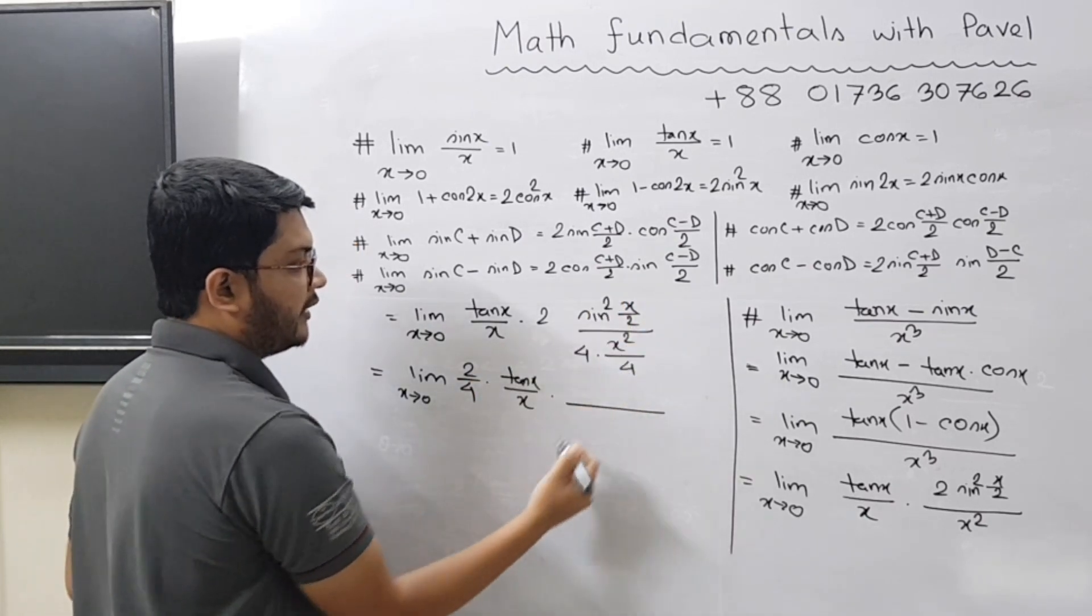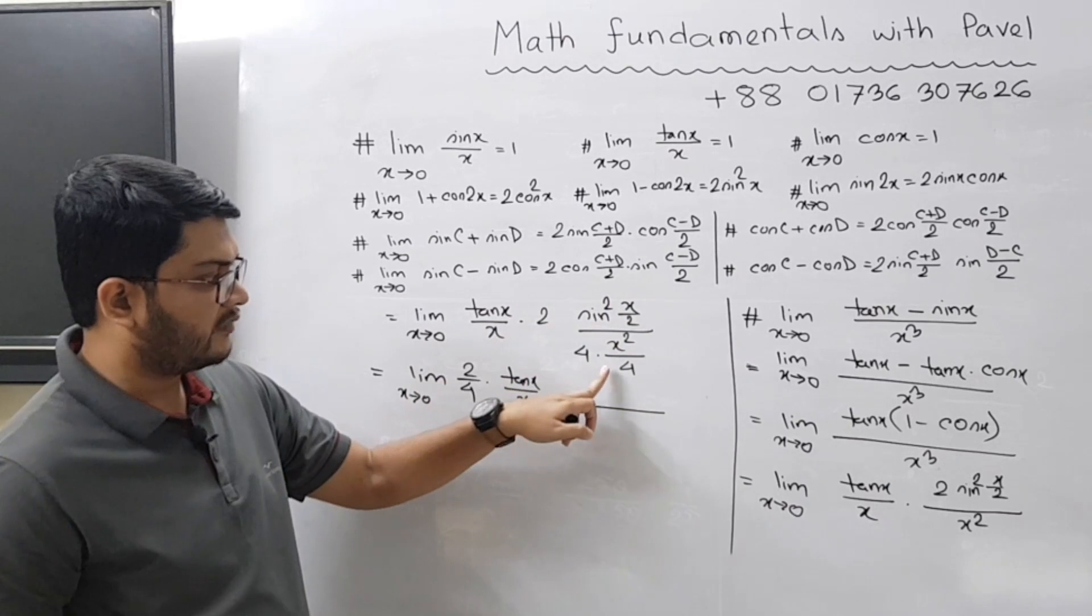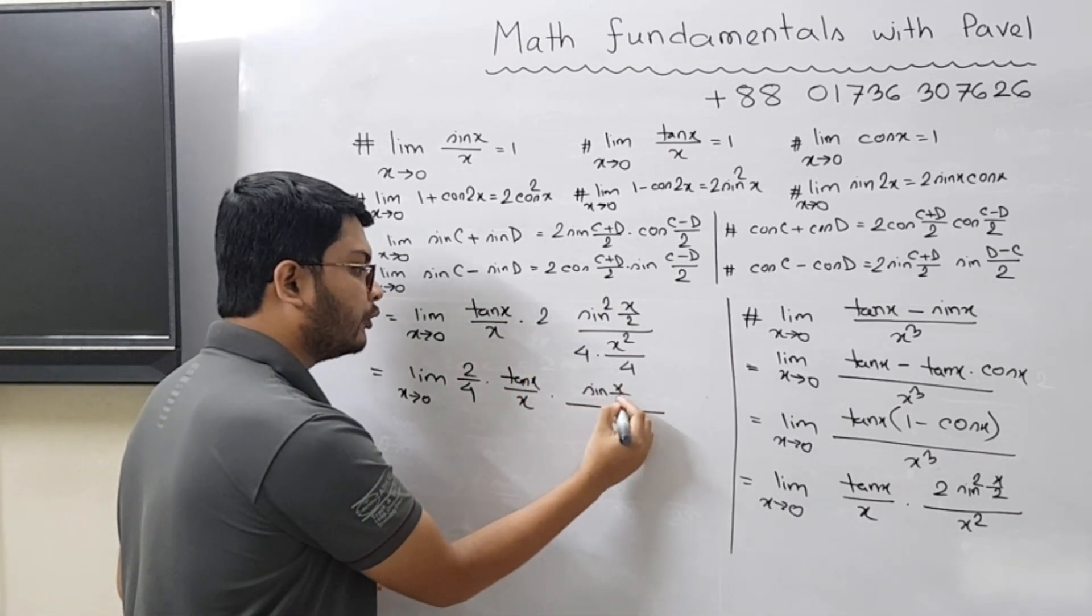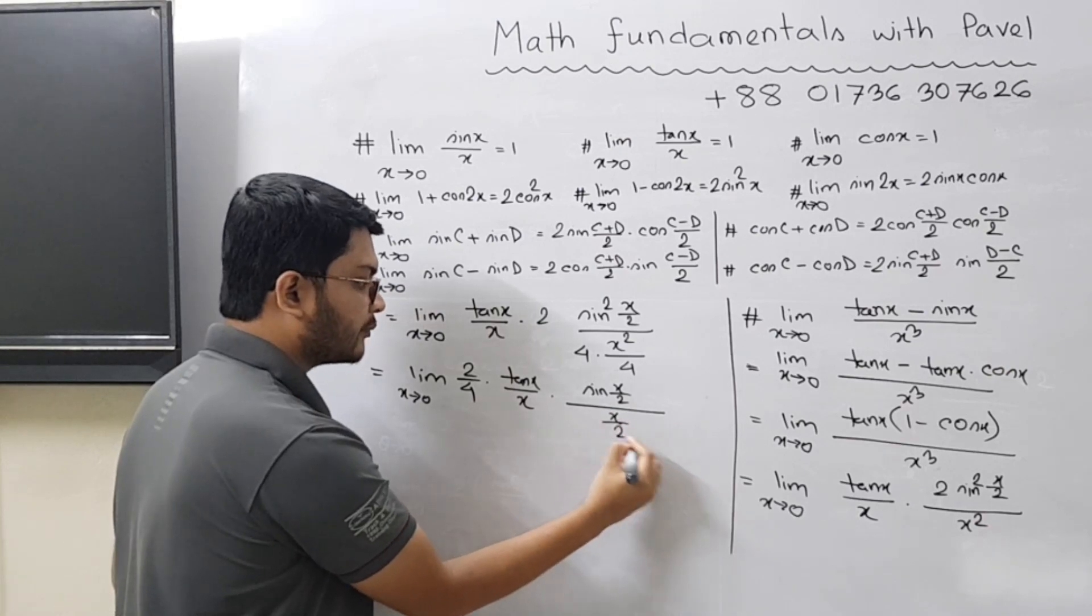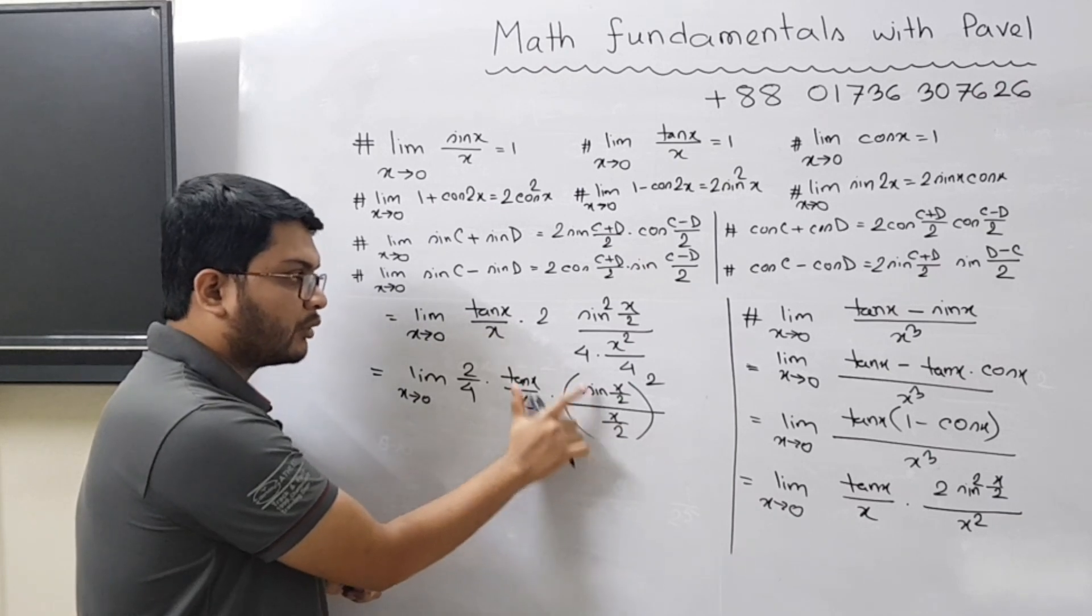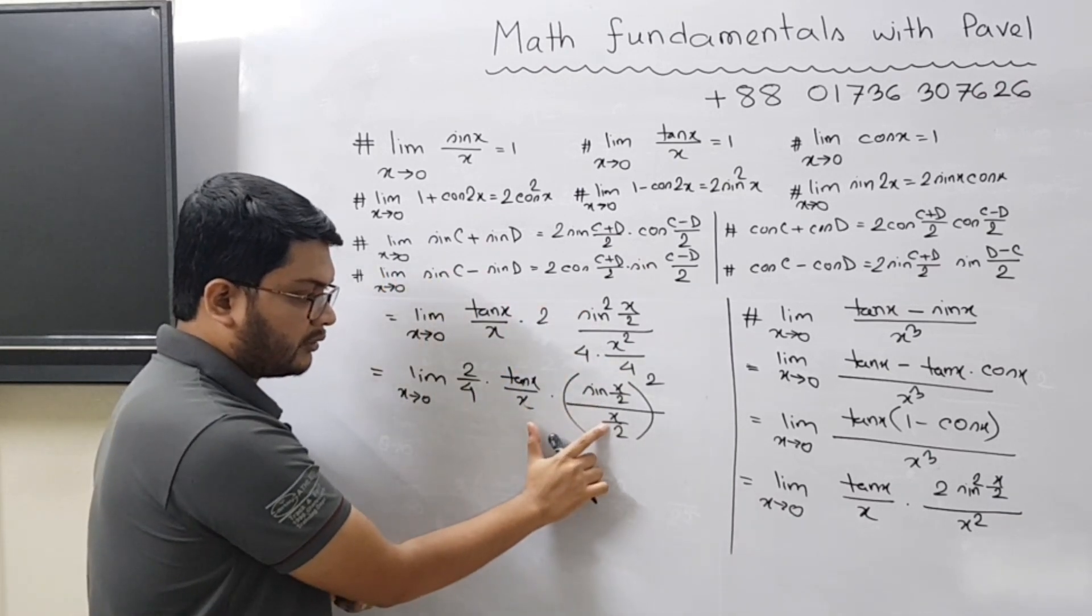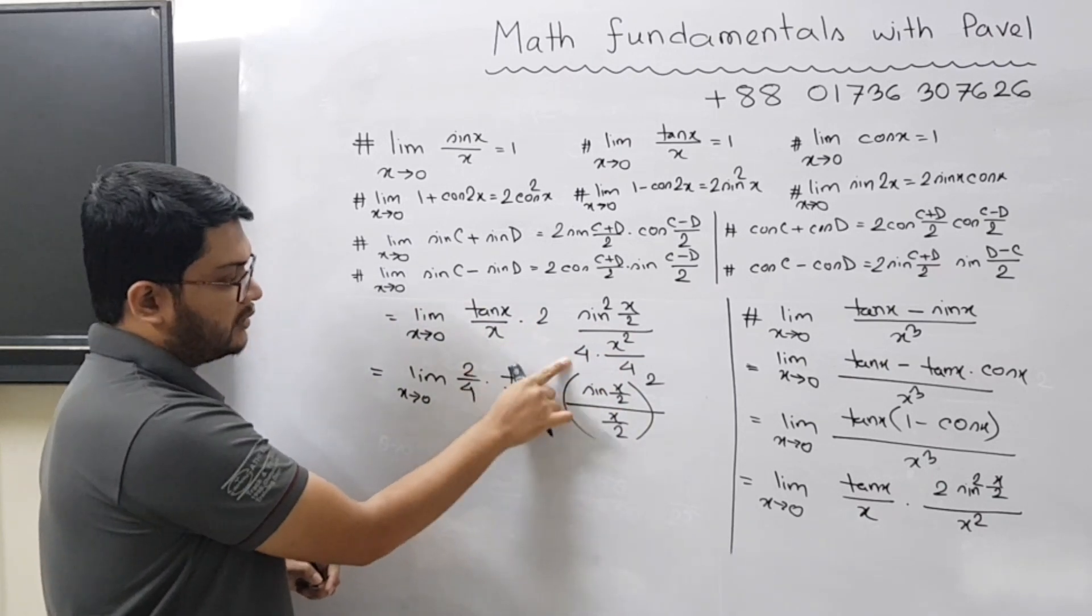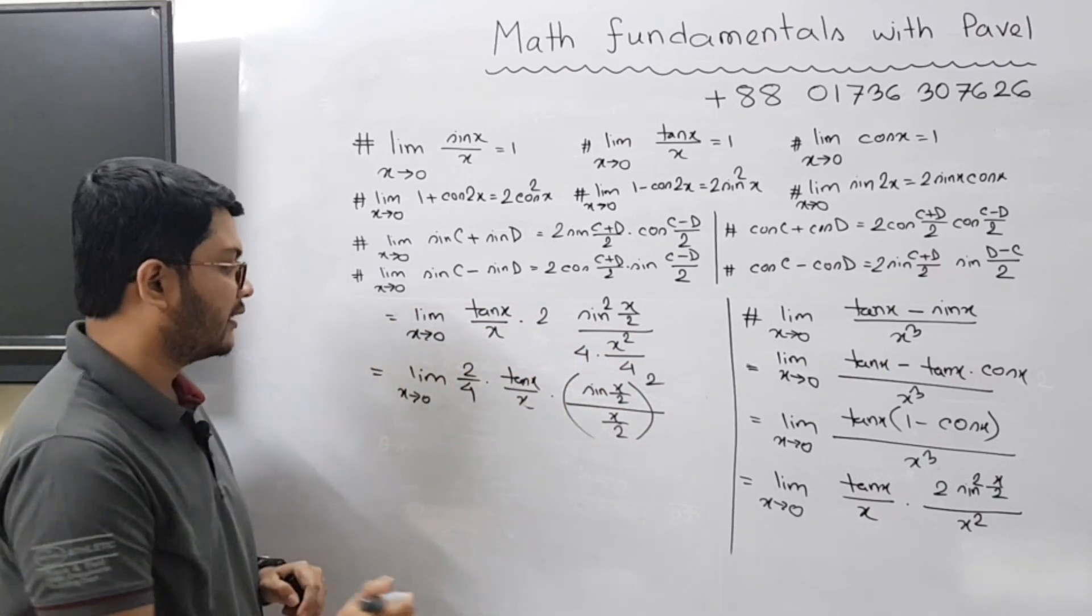So you are left with sin² (x/2) divided by x²/4. So you can write it as [sin(x/2) / (x/2)]². If you square this term, you get this term. If you square x/2, you get x²/4, and these remaining parts have been adjusted in the beginning.